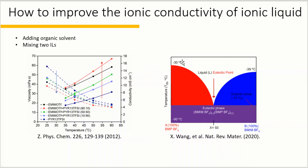A new eutectic solution is formed when two cations BMP and BMIM are mixed together with BF4 anion. The melting temperature of BMP-BF4 is -30°C and the melting temperature of BMIM-BF4 is -39°C. When these two ionic liquids are mixed to form a eutectic phase, the melting point decreases to -74°C. The lower melting temperature of the eutectic mixture arises because the dimensional mismatch between the cations plays an inhibitory role in the arrangement of the ions.